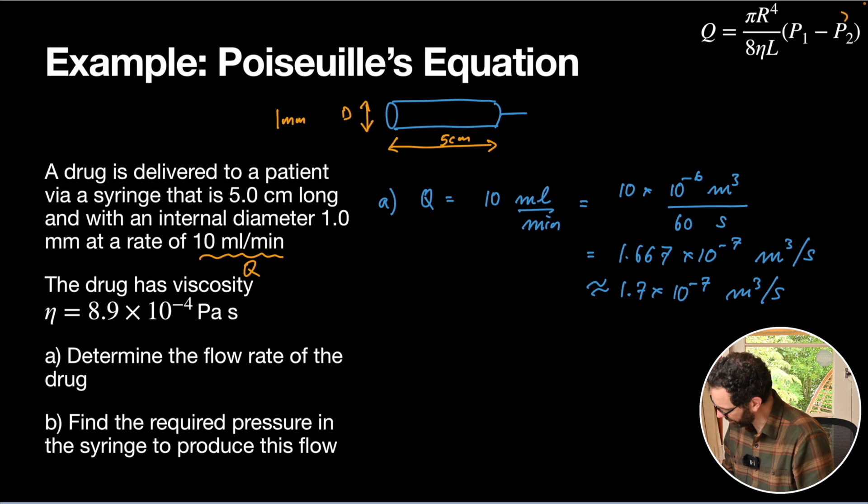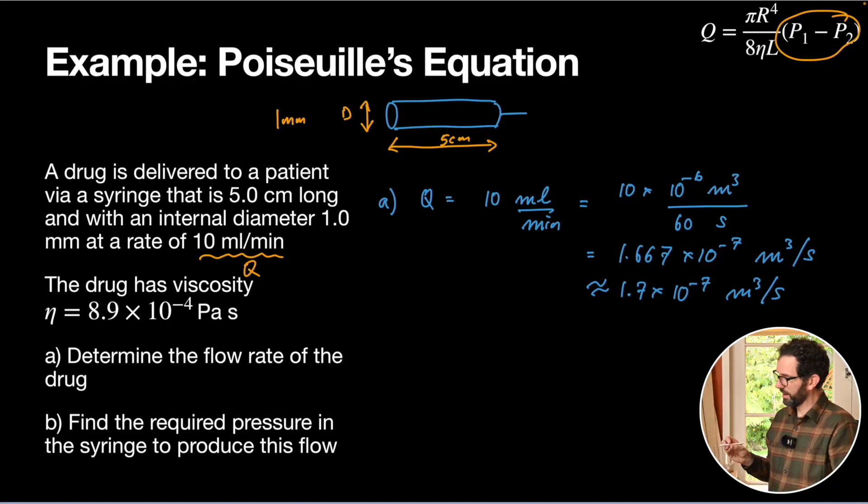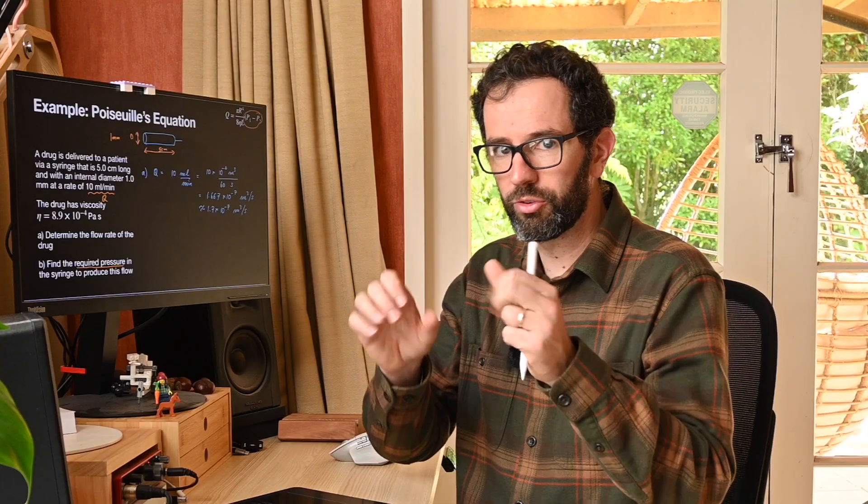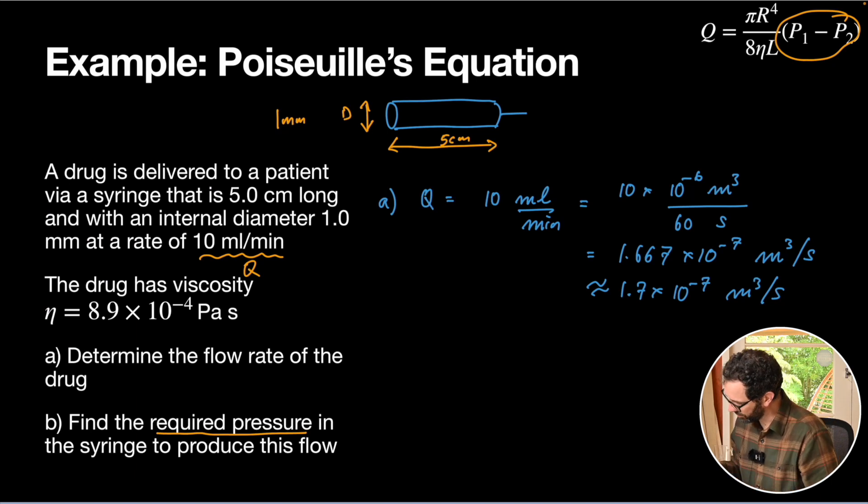Essentially, I have to take my Poiseuille equation here. That's how you say it, by the way. And we want to rearrange it for the pressure difference. When I ask for the required pressure in the syringe, it's really asking what the pressure between the two ends has got to be. So it's asking for P1 minus P2. So I'm going to have to rearrange my equations.